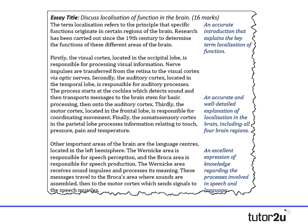That's probably already enough, but since we know the language centres are in the specification, marks will be credited for including them. Other important areas are the language centres located in the left hemisphere. The Wernicke area is responsible for speech perception and the Broca area for speech production. The Wernicke area receives sound impulses and processes the meaning; messages then travel to the Broca's area where sounds are assembled, and then to the motor cortex which sends signals to the speech muscles. That brings us to around the 175 word mark.